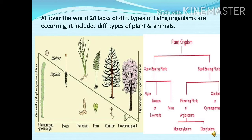On the basis of classification, there are different kinds of plants in the system of classification. When we learn about biodiversity related to plants, that kind of biodiversity we can call phyto-diversity or plant biodiversity.